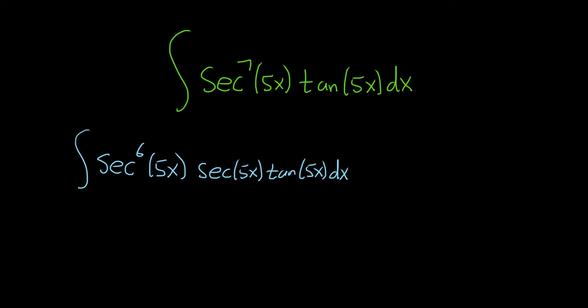So we've basically factored out a secant from the secant to the sixth. And you can check when you multiply secant times secant to the sixth you get secant to the seventh. So you've saved a secant tangent.